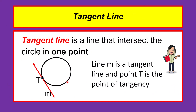A tangent line is a line that intersects the circle in exactly one point. We have the given circle and line M. Line M intersects the circle in exactly one point T, and this point T is the point of tangency.